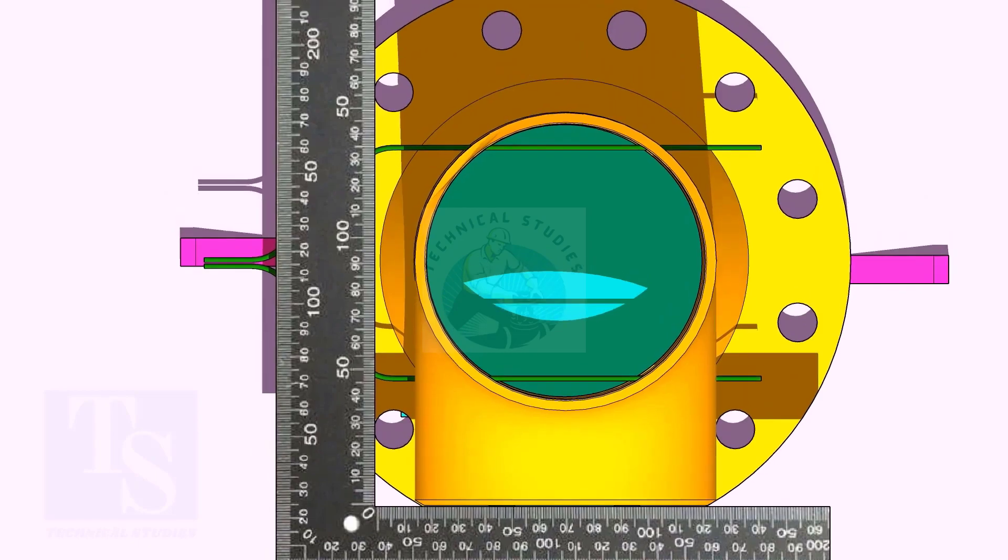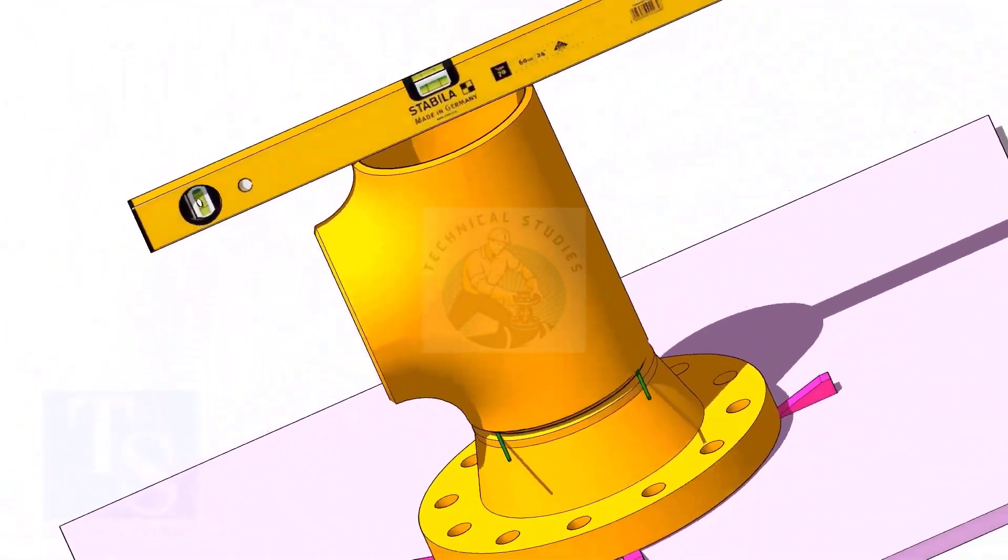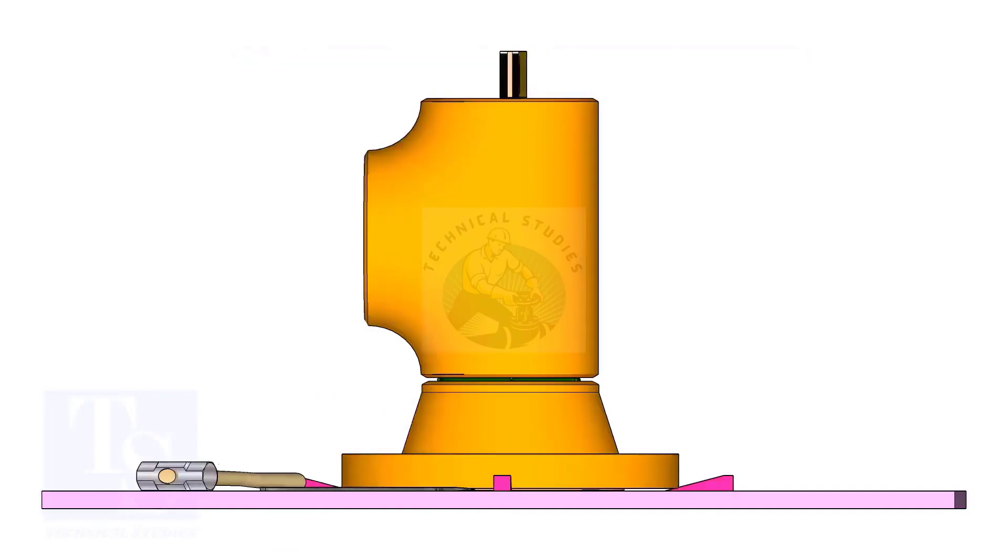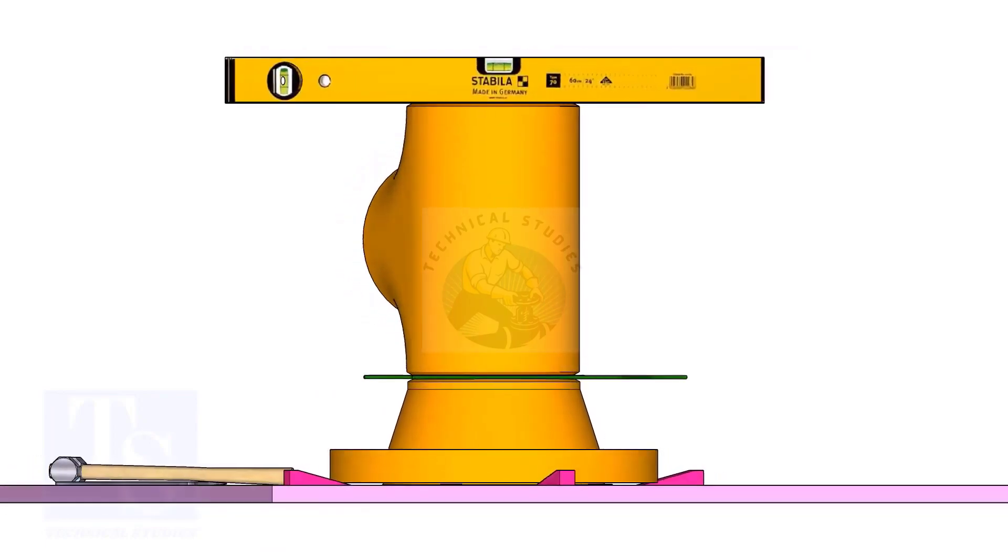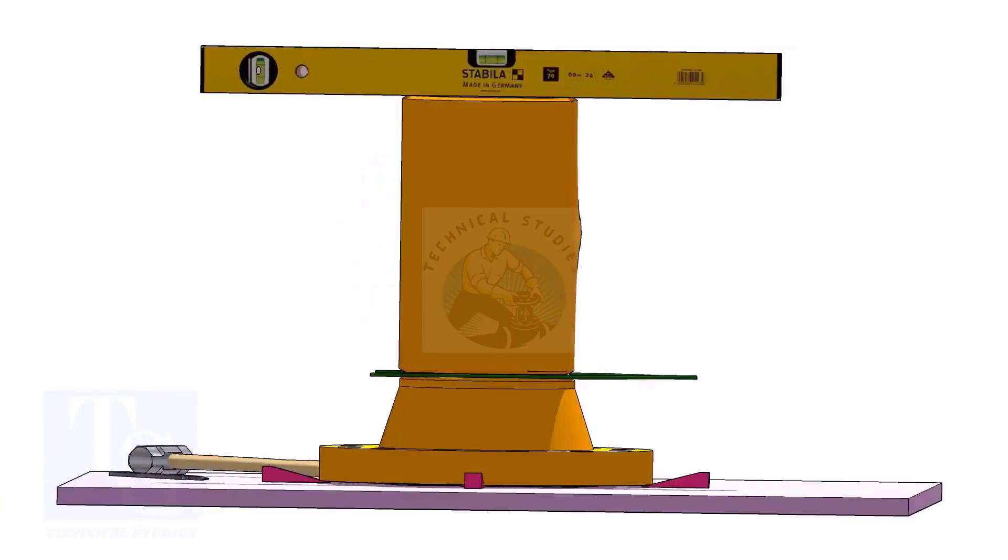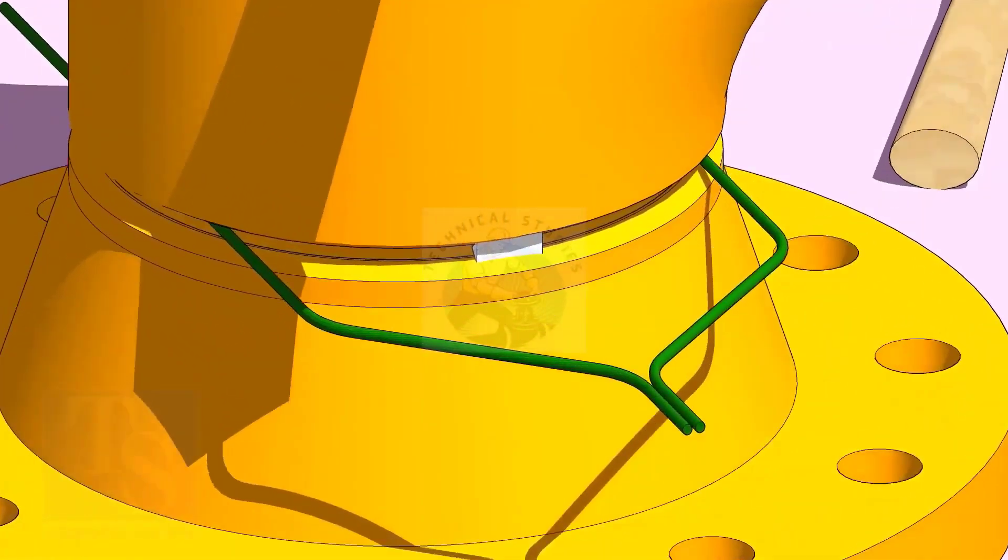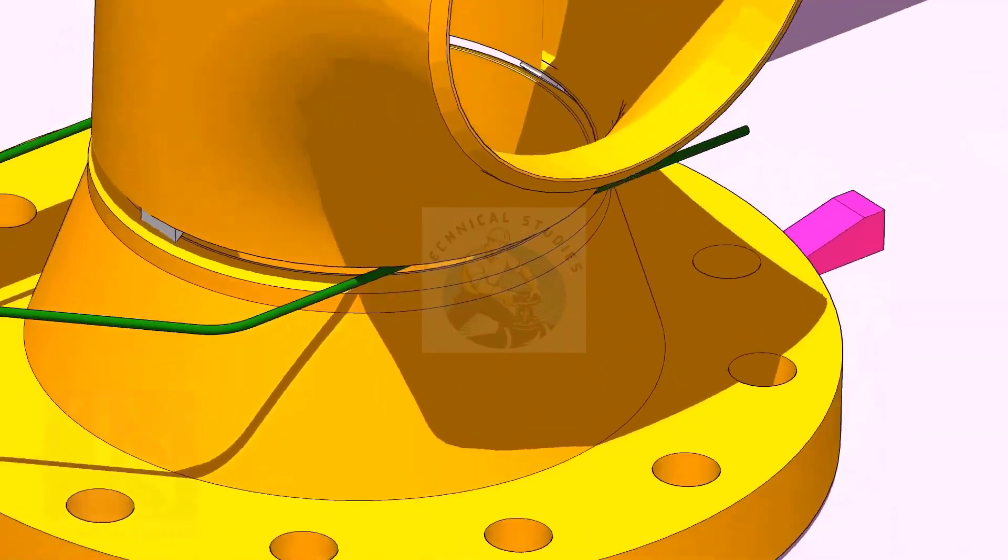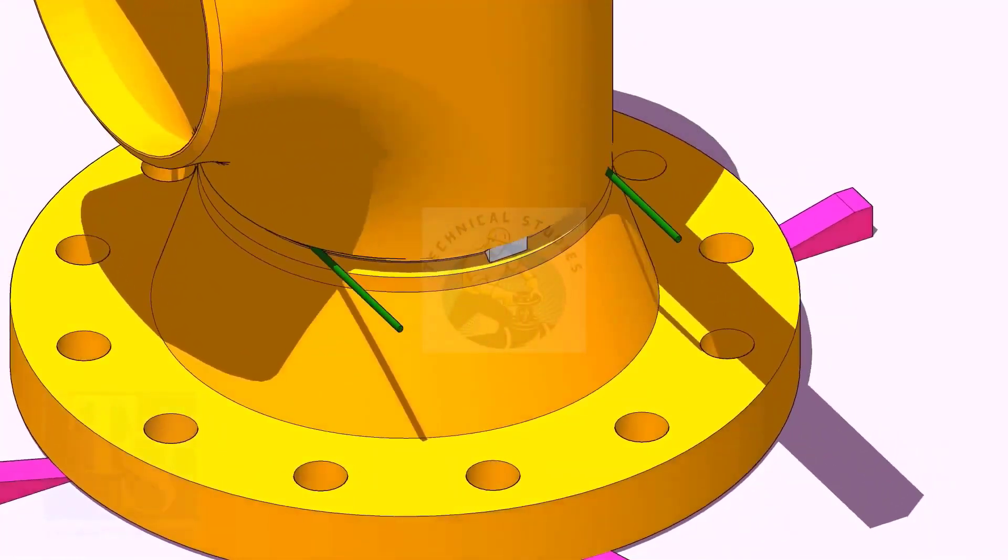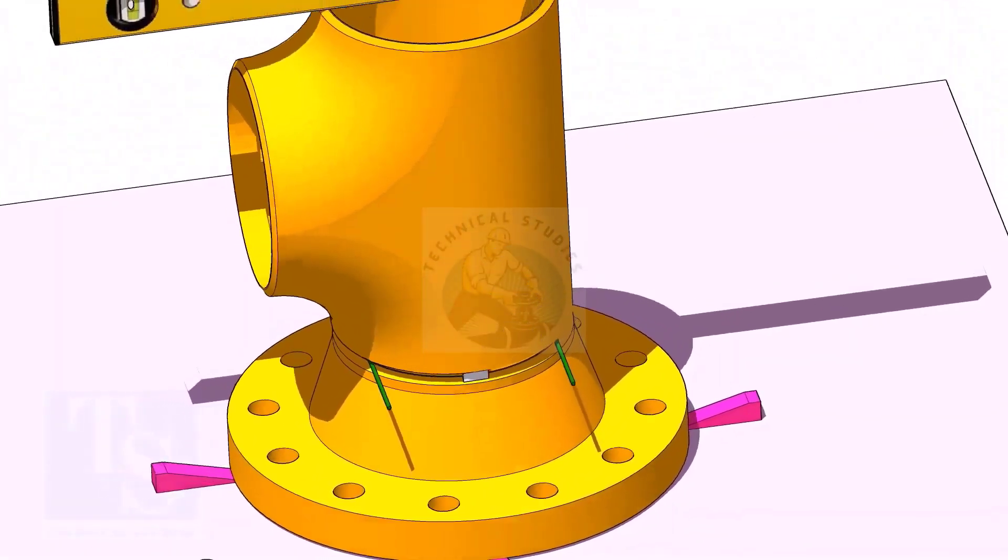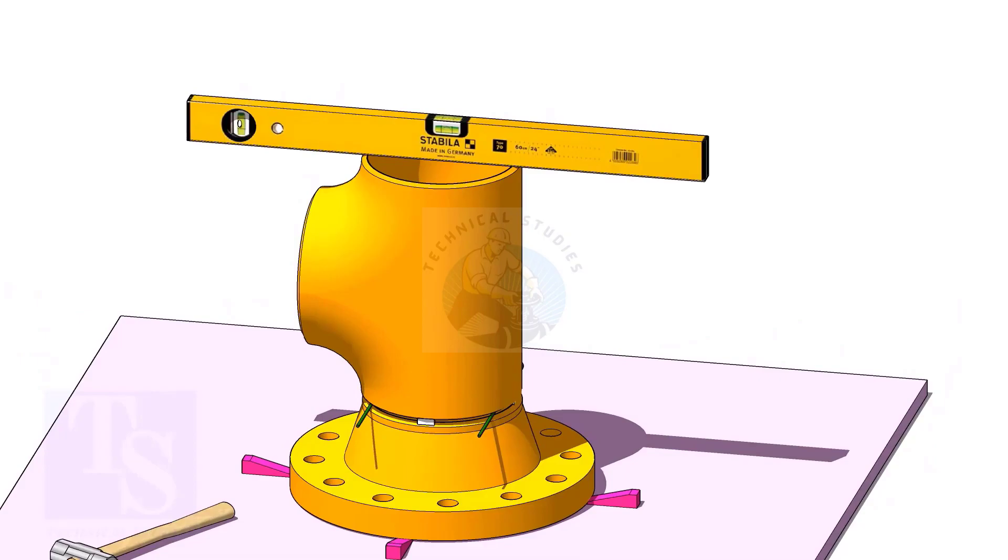Correct the overlap. Check the top level and tack weld. The sequence of the tack welding shall be 0 to 180 degree and 90 to 270 degree.